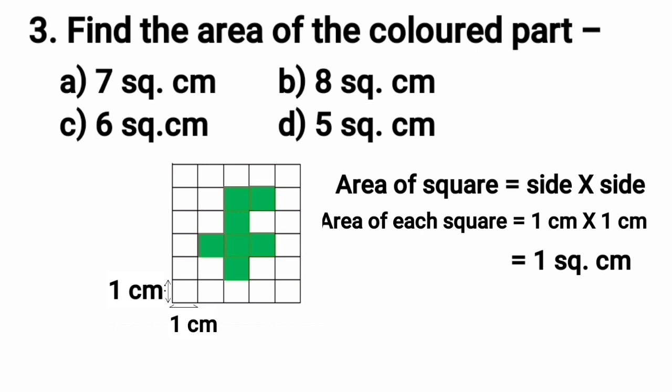Now, we will count the number of colored squares. We will come to know the area of the colored portion which will be equal to the number of colored squares. Let's count the colored squares now. Yes, here is the first square, then 2, 3, 4, 5, 6, and 7.